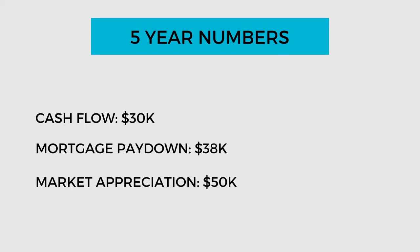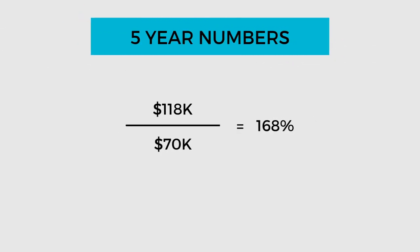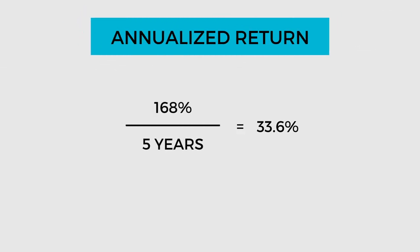Is this a guarantee? Absolutely not, but we are calculating a projected rate of return and not an actual rate of return. So if I want to see my five-year numbers, I take my $6,000 cashflow times five years, which gives me $30,000, my $38,000 in mortgage paydown, and my $50,000 in market appreciation. I add those three numbers together and divide by my initial investment, which in this case was $70,000. That gives me a gross return of 168%. Divided by the number of years in my projection — which is five — it gives me a 33.6% annual return.